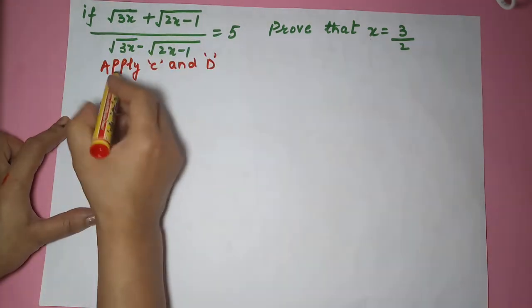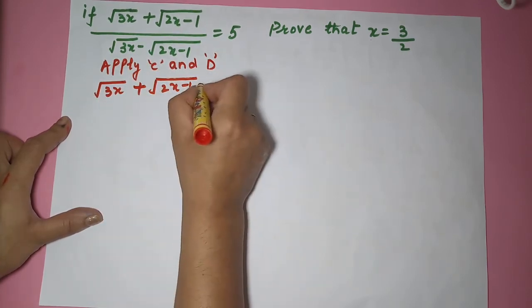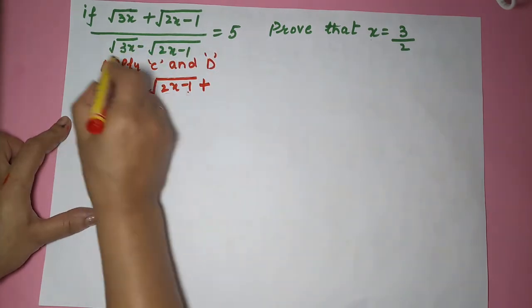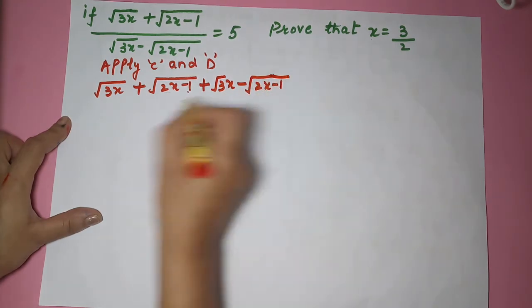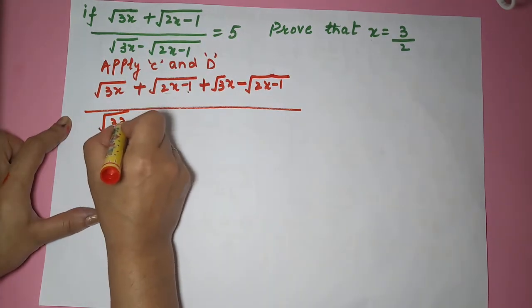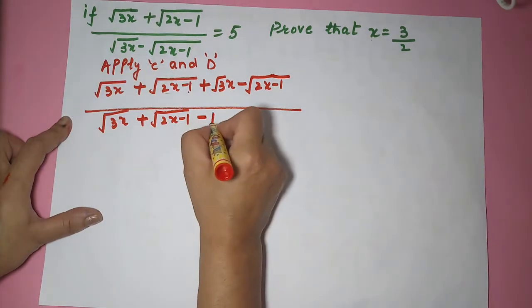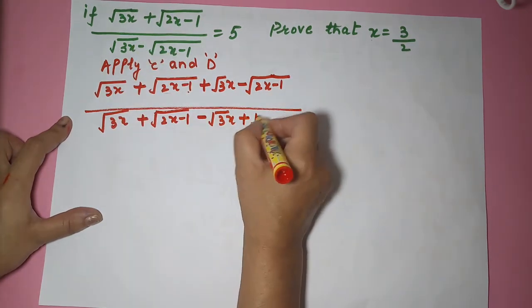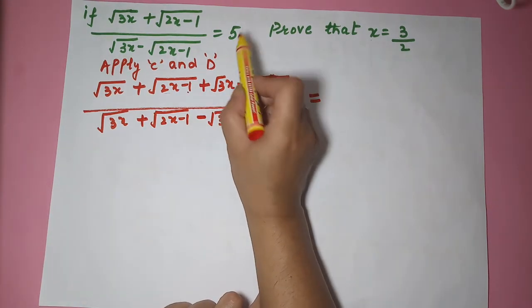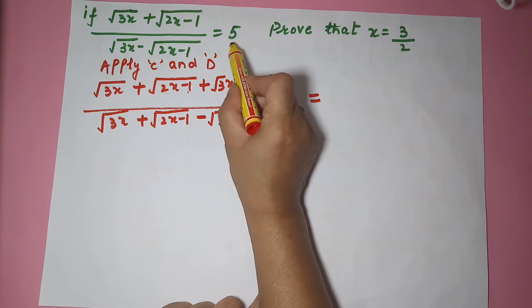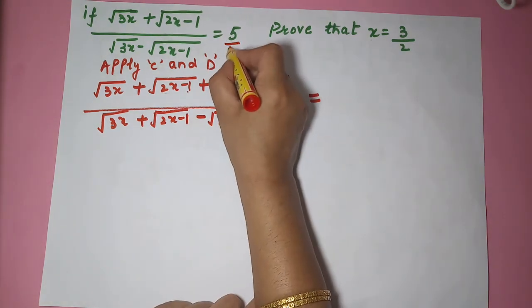Applying componendo and dividendo: numerator is under root of 3x, plus denominator which is under root of 2x minus 1, and then under root of 3x minus under root of 2x minus 1, divided by under root of 3x plus under root of 2x minus 1 minus denominator, so minus under root of 3x plus under root of 2x minus 1. On the right hand side we have only 5. Sometimes students make the mistake of not applying componendo and dividendo here because they feel there is no denominator.